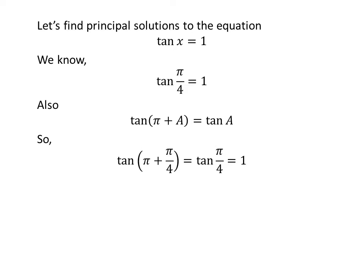Application of the above identity implies that tangent of pi plus pi upon 4 is equal to 1, which gives us tangent of 5 times pi upon 4 is equal to 1.